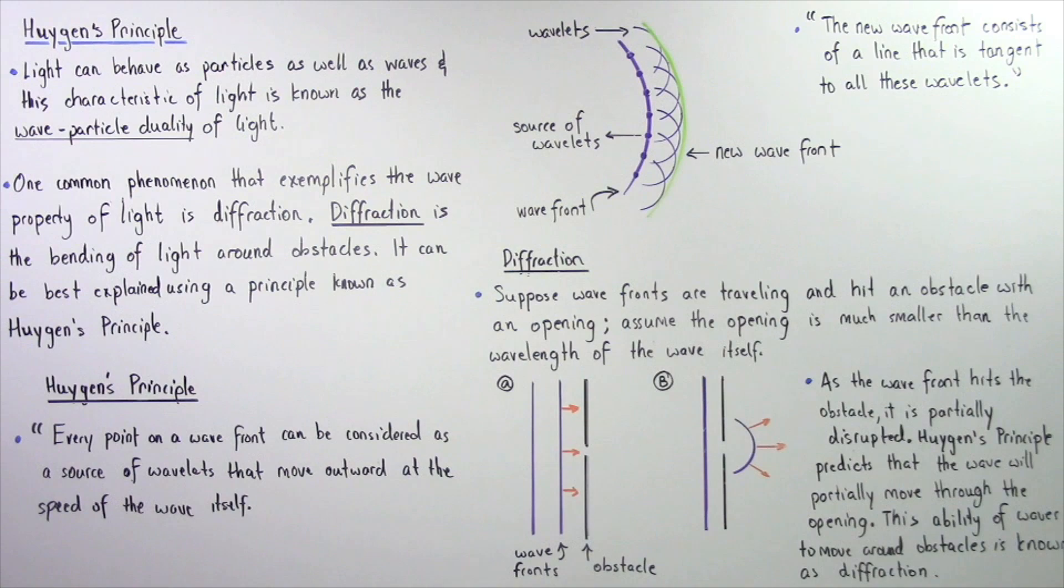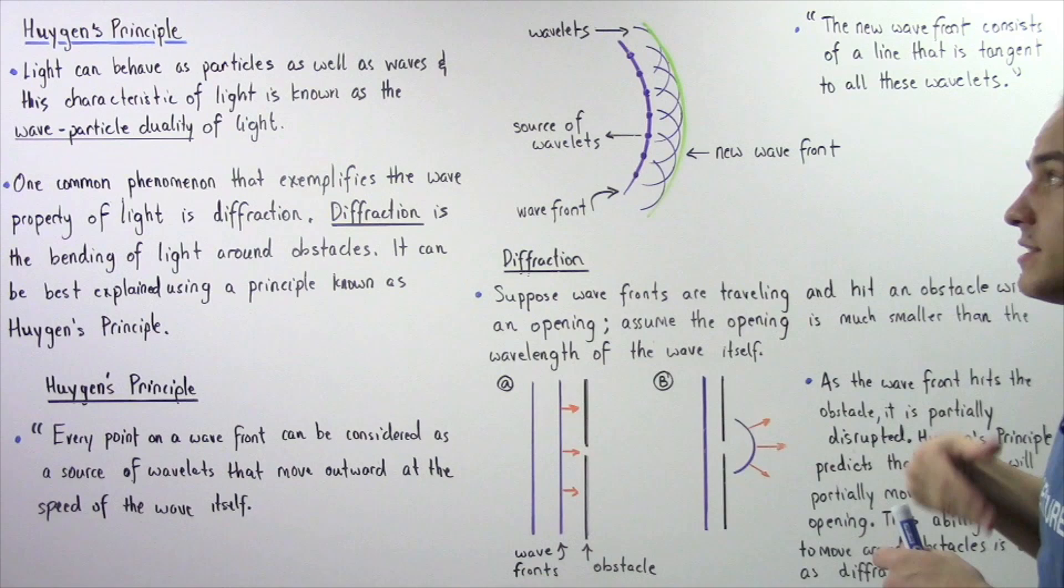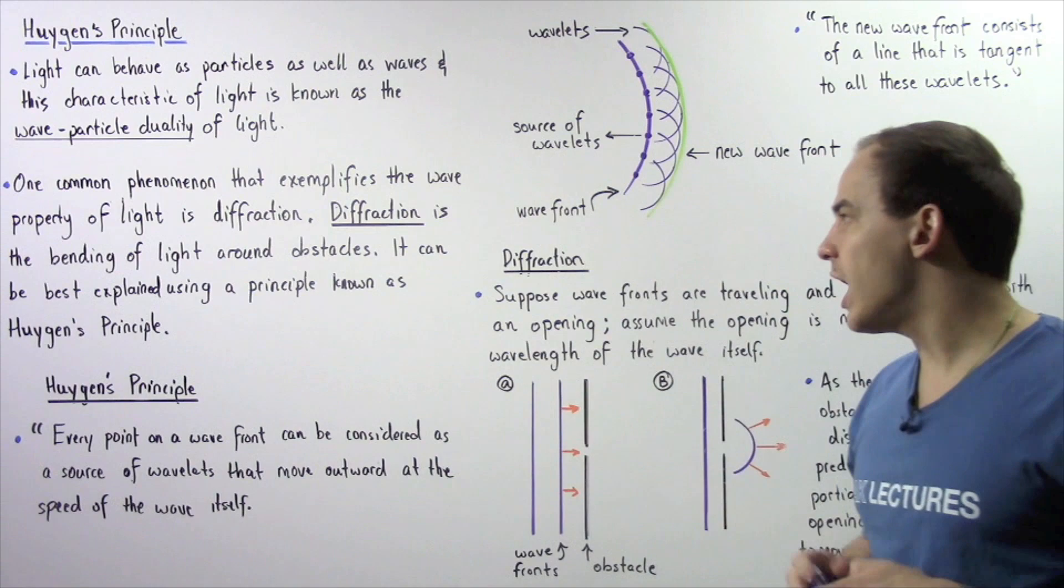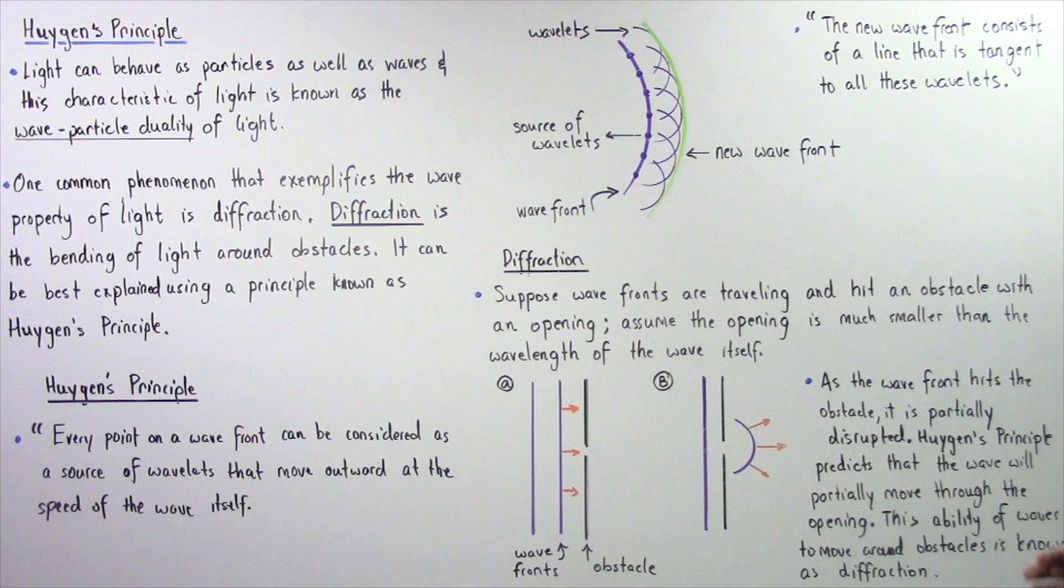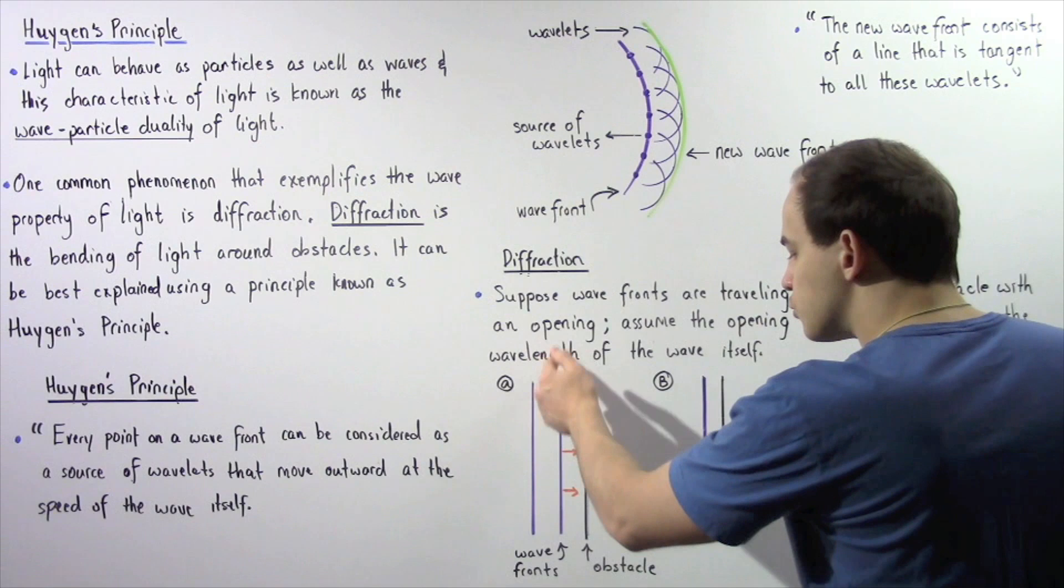And it moves with the speed of this initial wave front. This concept, this principle is known as Huygens principle. Now let's discuss diffraction and let's see how Huygens principle essentially explains why diffraction takes place. Suppose wave fronts are traveling with a certain velocity and hit an obstacle with a very small opening.